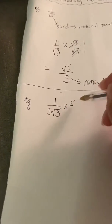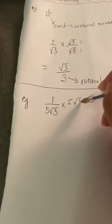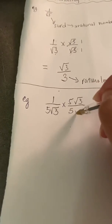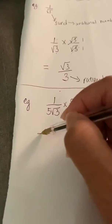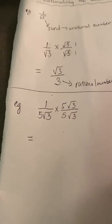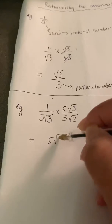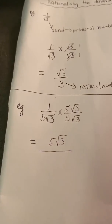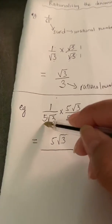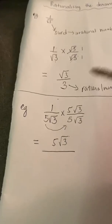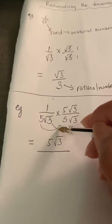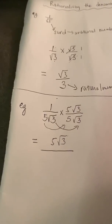We could multiply 1 on 5 root 3 by 5 root 3 on 5 root 3. Multiplying the numerator, 1 times 5 root 3 will give us 5 root 3. And multiplying the denominator, we do 5 times 5, which is 25. Root 3 times root 3, which is 3.